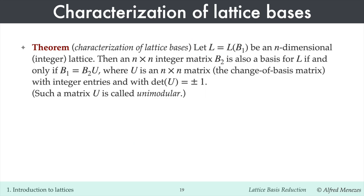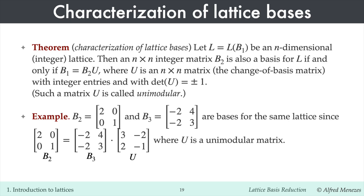Now let's characterize the bases of a lattice. Let L be an n-dimensional lattice with basis matrix B1. Then another n-by-n integer matrix B2 is also a basis matrix for L if and only if B1 equals B2 times U, for some unimodular matrix U. A unimodular matrix is a square integer matrix whose determinant is plus or minus 1. For example, we saw earlier that B2 and B3 are both basis matrices for the same lattice; indeed, B2 can be written as B3 times the unimodular matrix U. I'll leave the proof of this theorem to you as an exercise.